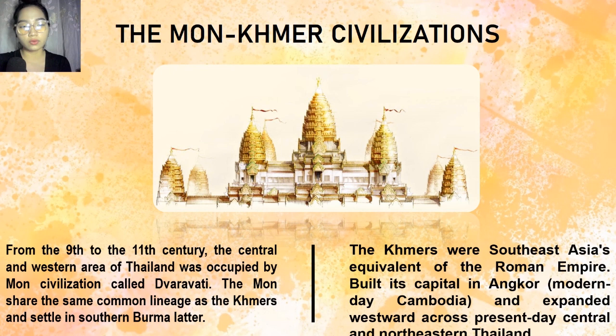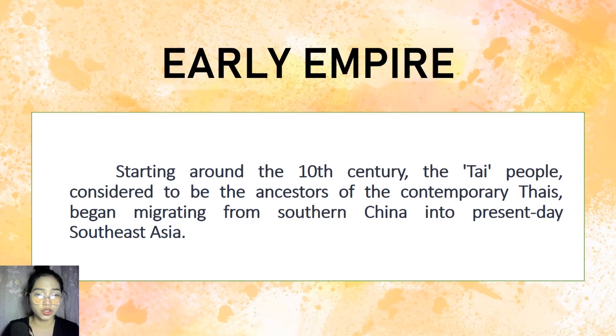The Mon and Khmer civilizations gave great influence to Thai civilization, and they were there even before the arrival of Thai people. Starting around the 10th century, the Thai people, considered to be the ancestors of the contemporary Thais, began migrating from southern China into present-day Southeast Asia. Large numbers of Thais fled present-day Burma and China to escape the Mongol armies of Kublai Khan.